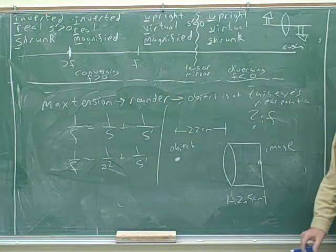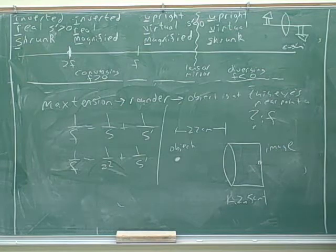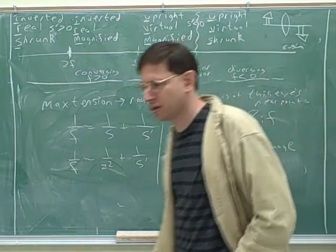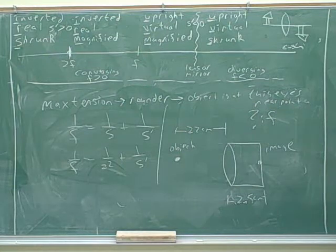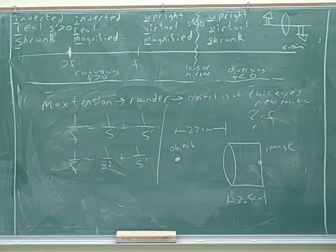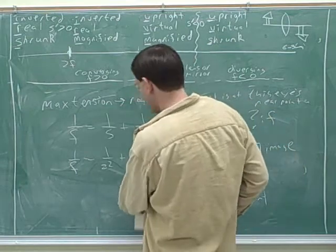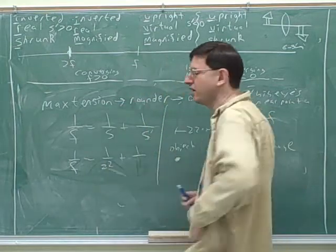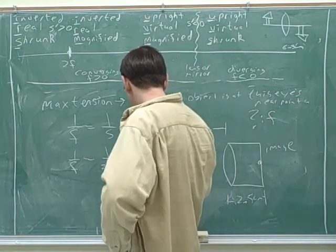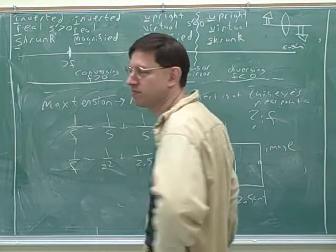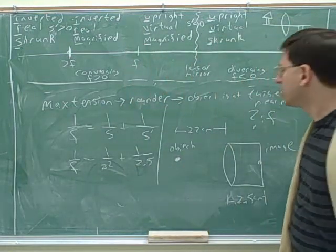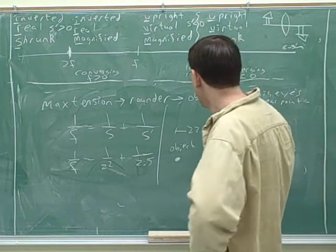We never really quite clarified that. So what would S prime be? 25. So 1 over F equals 1 over 25 plus 1 over 25. Now, something should be worrying you - is there a sign? Do we usually put a sign on an image distance? Yes, because it could be virtual or real. What does the sign represent? Virtual or real. So we should always try to put a sign in here.